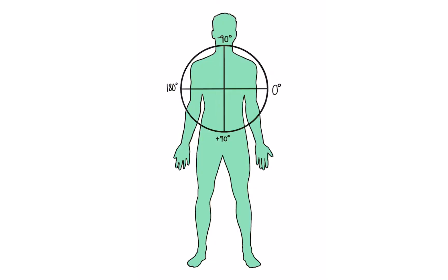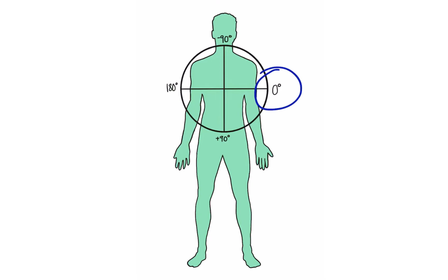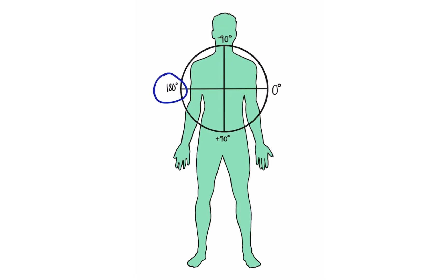The six limb leads view the heart in a vertical plane called the frontal plane, or sometimes the coronal plane — it's more of a two-dimensional view. You can envision this as a large circle superimposed over the patient, with zero degrees straight to the patient's left, positive 90 degrees straight down, negative 90 degrees straight up, and 180 degrees straight to the patient's right. The six limb leads view electrical forces moving either up and down or left and right in this coronal plane.